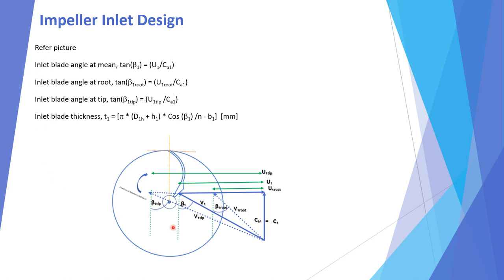To find the inlet blade angle: the impeller inlet blade angle at mean position uses the velocity triangle, where tan(β1) = U1 / Ca1. For the root angle, tan(β1_root) = U1_root / Ca1. For the tip angle, the velocity triangle gives tan(β1_tip) = U1_tip / Ca1. Using these formulas we can calculate the mean inlet blade angle, the blade angle at root, and the blade angle at tip.